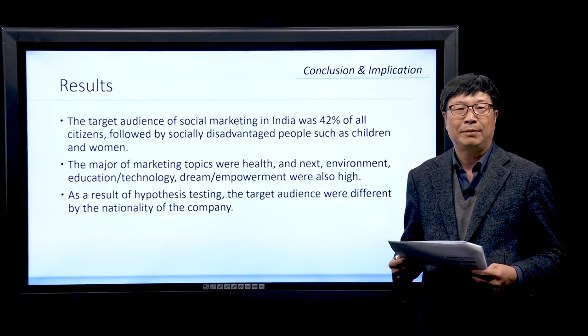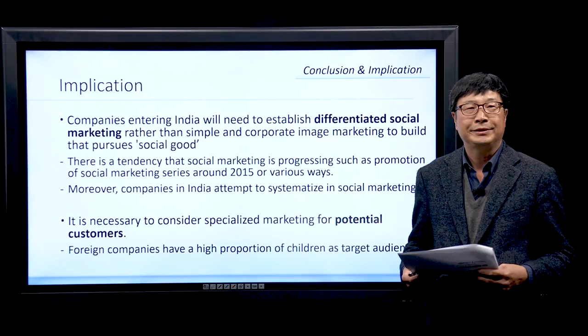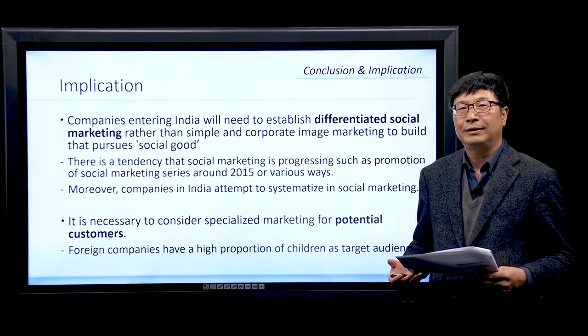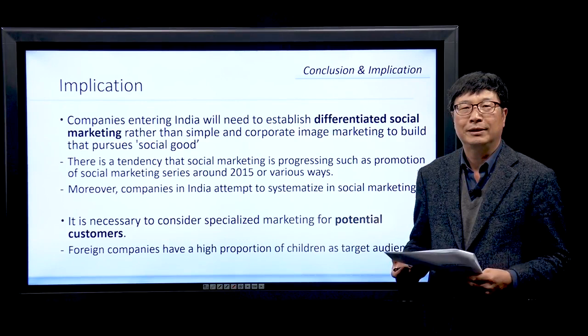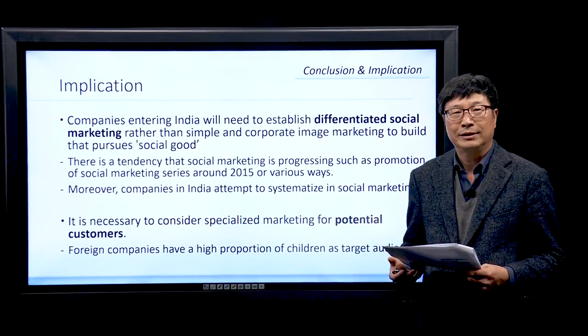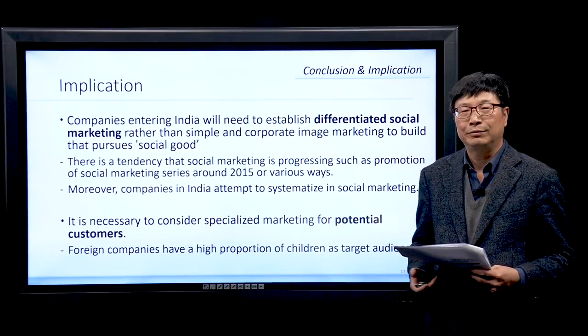The main implications from our research are as follows. Companies wishing to enter India will need to establish differentiated social marketing rather than a simple corporate image. There is a tendency for social marketing to progress, such as promotion of social marketing series around 2015, through various ways. Companies in India are adapting by systemizing social marketing, and it is necessary to consider specialized marketing for potential customers. Foreign companies have a high proportion of children as their target audience.